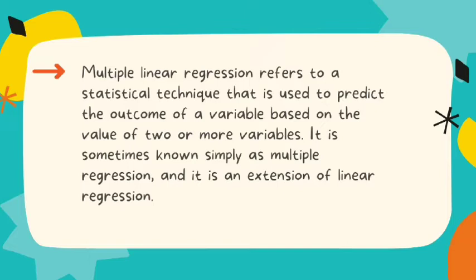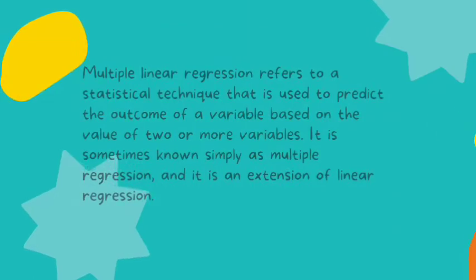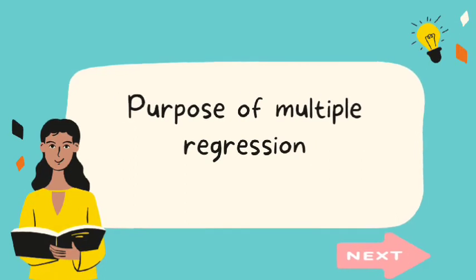It is sometimes known simply as multiple regression, and it is an extension of linear regression. The variable that we want to predict is known as the dependent variable, while the variables used to predict the value of the dependent variable are known as independent or explanatory variables.